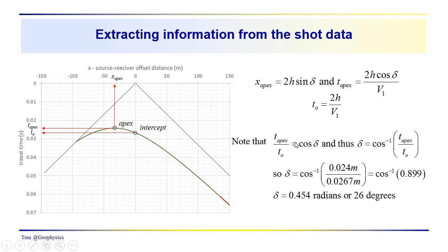And here I'm just kind of working through the analysis. You can see that if we take the ratio of t apex to t0, they both share this term, 2h over v1. So if we divide t apex by t0, we get rid of 2h over v1. We have t apex over t0 is equal to the cosine of the dip. So we can then calculate the dip just as the inverse cosine of t apex over t0. And then just running through the arithmetic here, we get the inverse cosine of 0.899, which gave me 0.454 radians, or about 26 degrees for the dip.